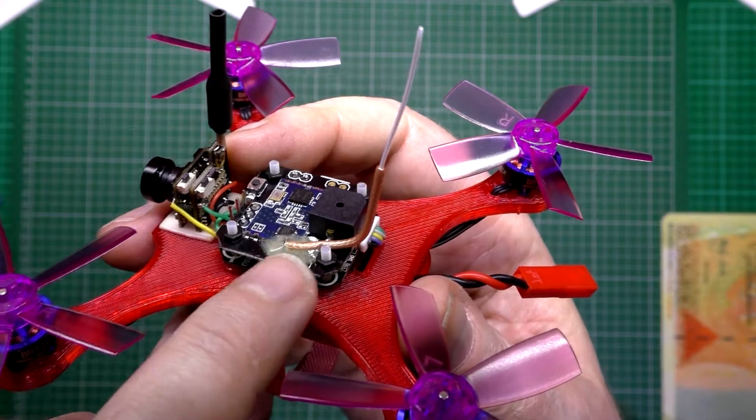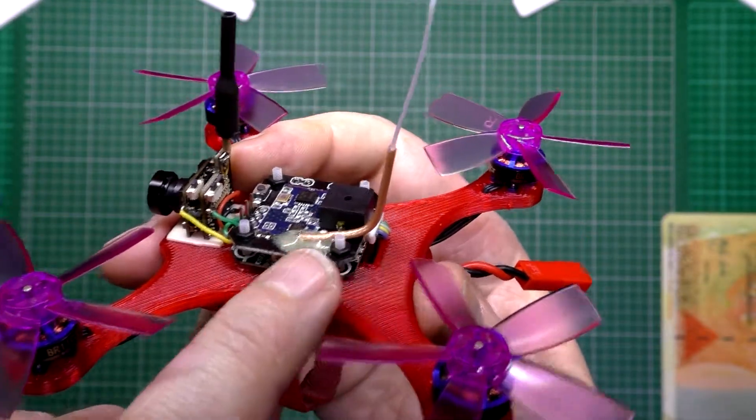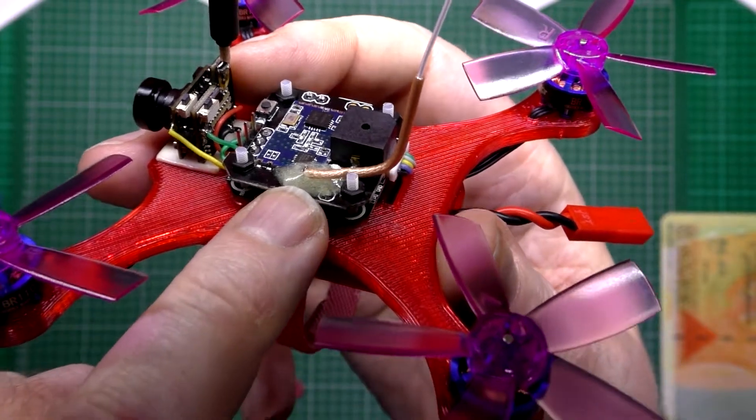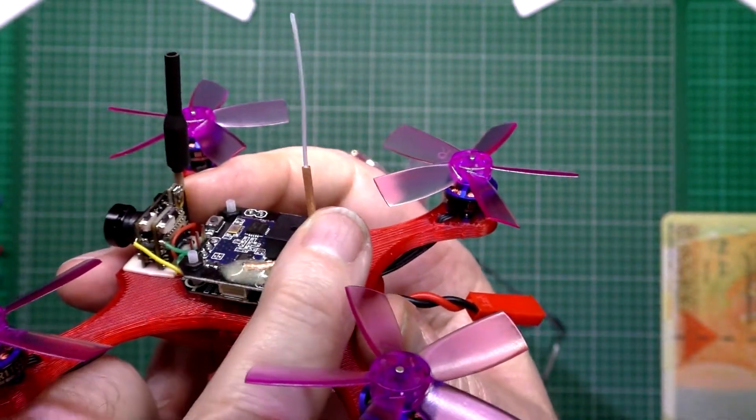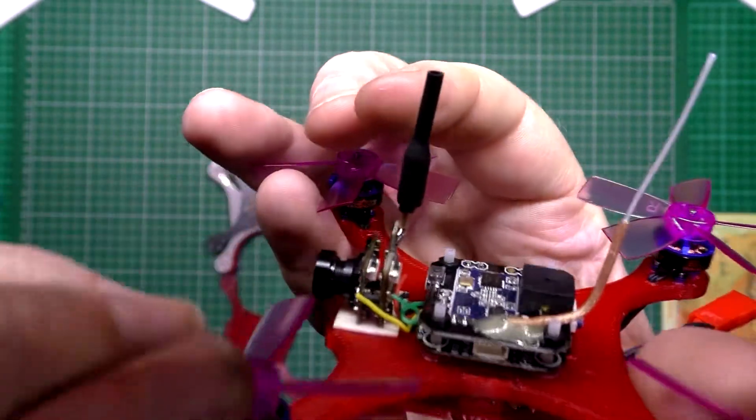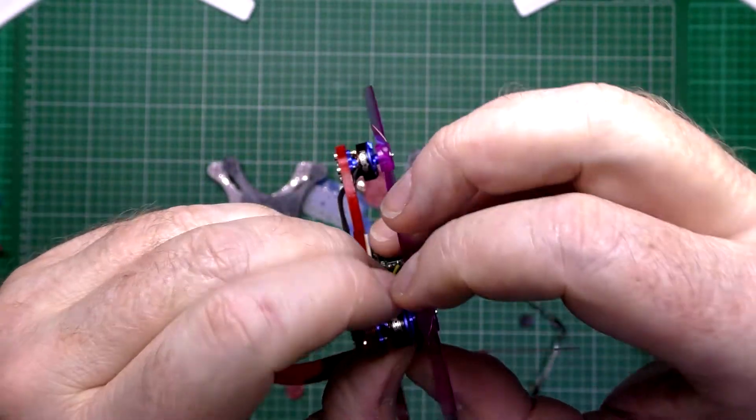On the first flight the antenna got caught in a prop and ripped it off, so I've had to hardwire it and made my own which is going absolutely nowhere. Now I want to try and show you, let's take this prop off.